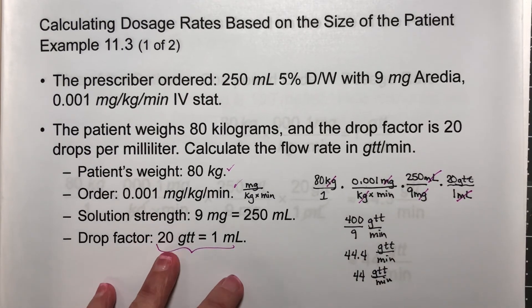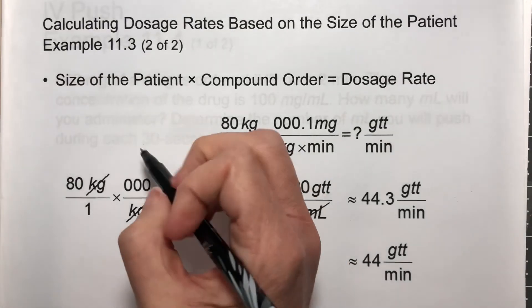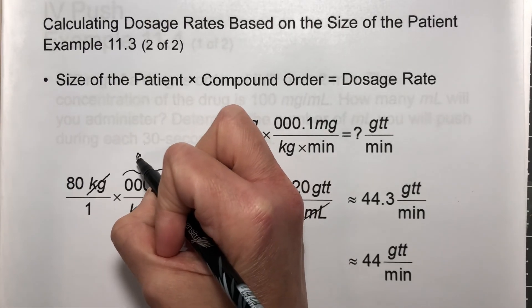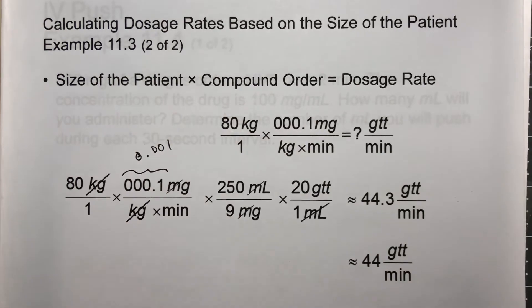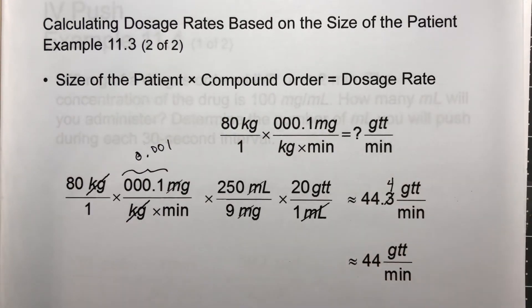The next slide has several typos on it. This right here should be 0.001, and this rounds to a 4. That's a 4 right there, not a 3. But otherwise, this next slide is okay.